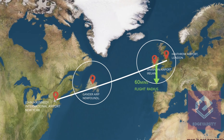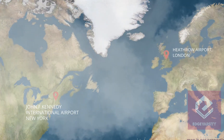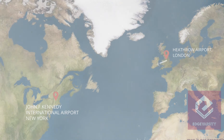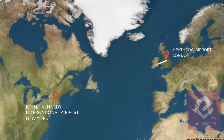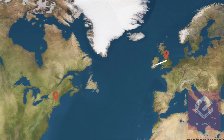In the same way, let's draw a 60 minutes travel time circle around Gander Airport, Newfoundland, Canada. Gander is the first airport the flight would encounter on the straight line path after crossing the ocean.